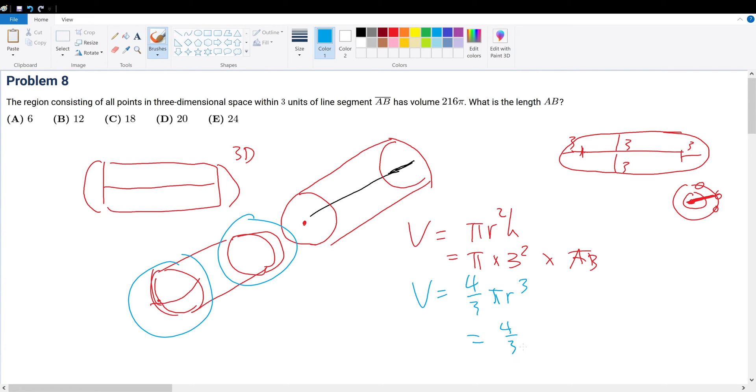So that means this has to be equal to 4/3 times π times the radius, which is 3 cubed, which is 3 squared times 4, 9 times 4, which is 36π. So in essence, 36π plus this volume is equal to 216π, and now we can solve for AB, right? Because we know that 36π plus 9πAB is equal to 216π.